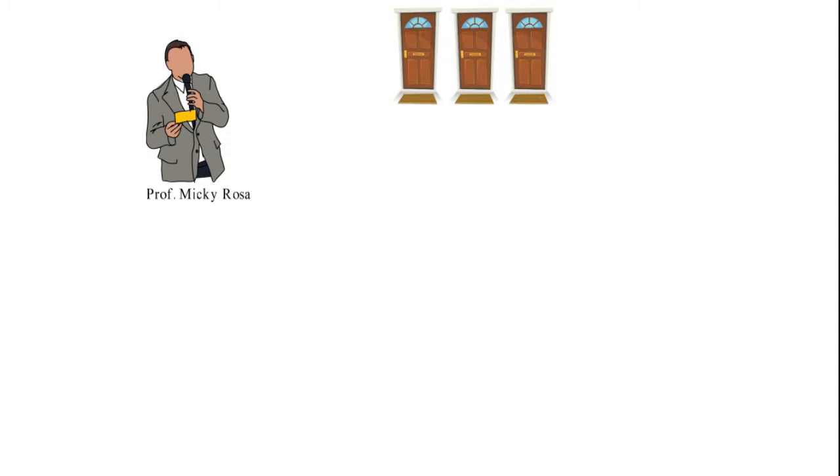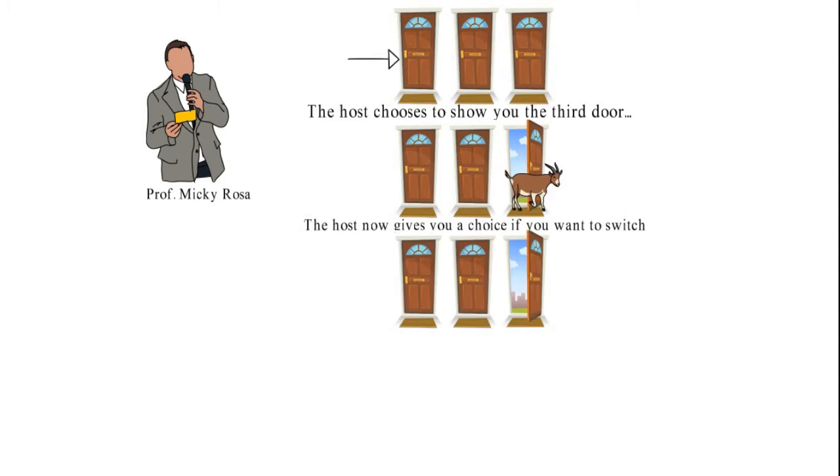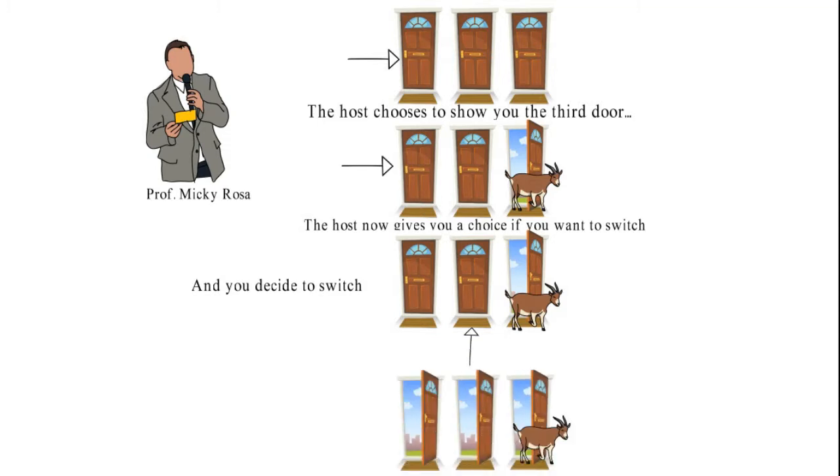The host of this game is professor Mickey Rosa who gives you the choice of choosing one door and you choose the first door. Now the host chooses to show you the third door which has a goat in it. Now the host gives you another choice if you want to change your selection and you make a good choice to switch from door number one to door number two and bang you have just won a brand new car.